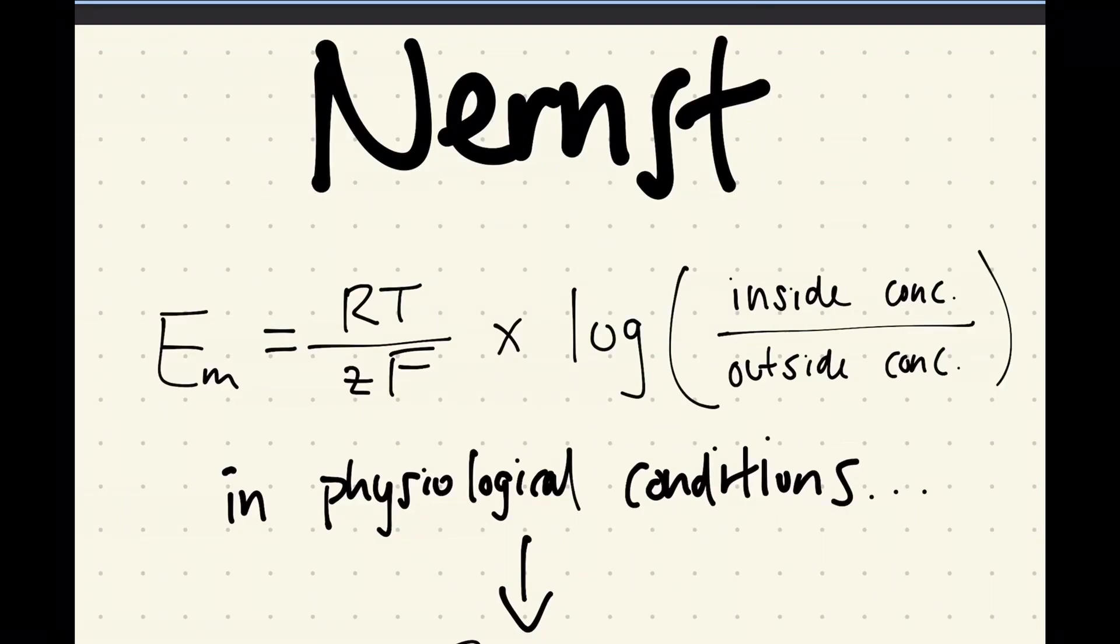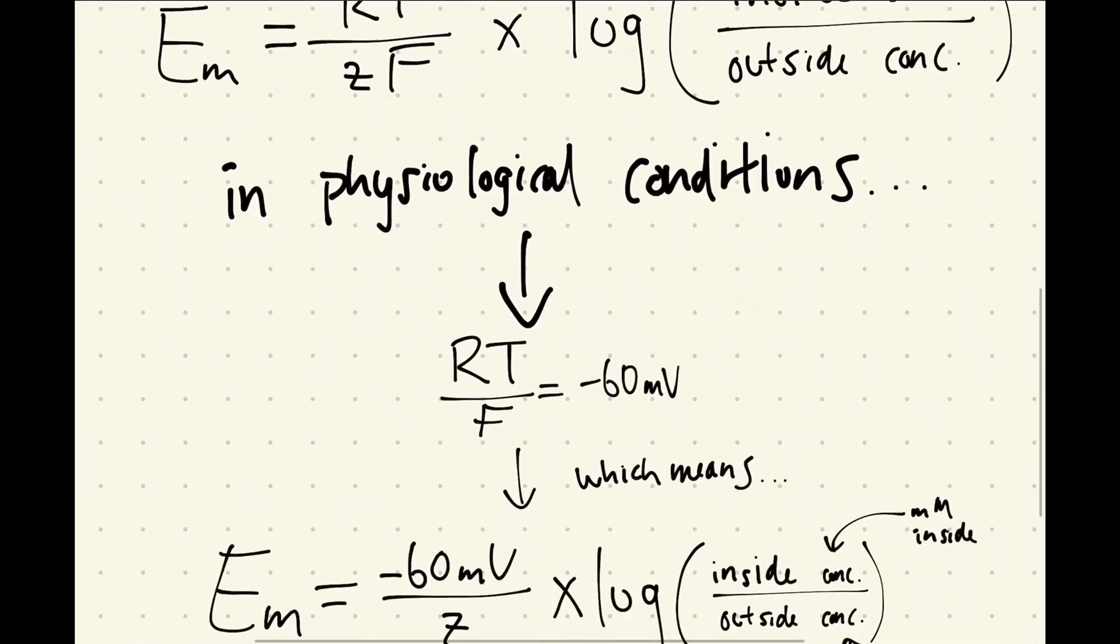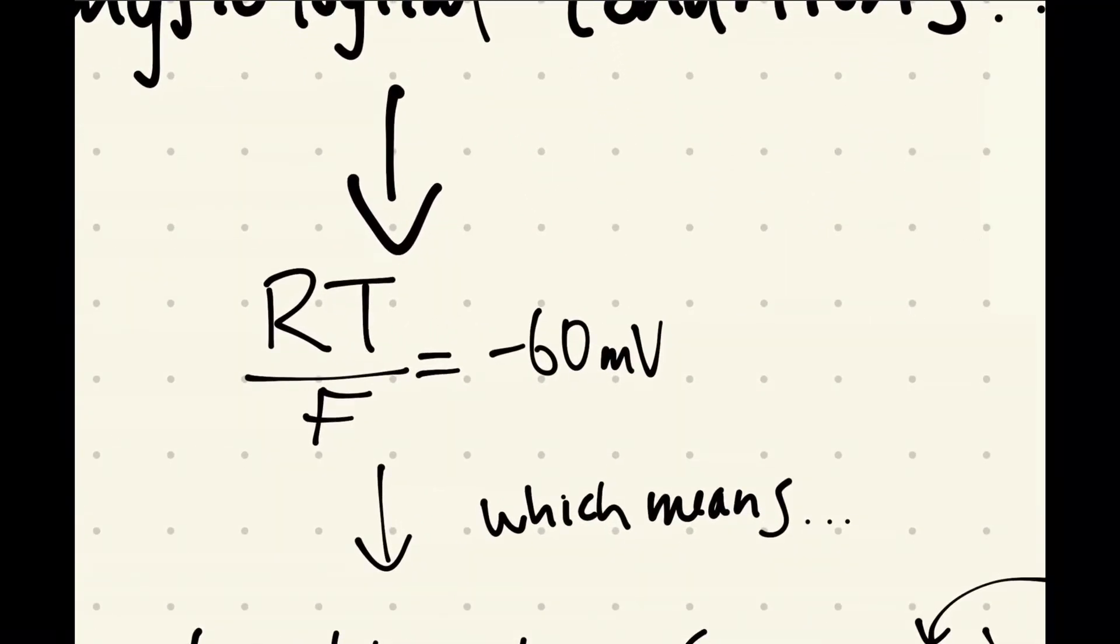So if I'm only looking at sodium, I'm only looking at potassium. And what this means in physiological conditions is that your RT over F value is going to equal negative 60 millivolts. R and F are both constants, and then T is your temperature at physiological conditions.